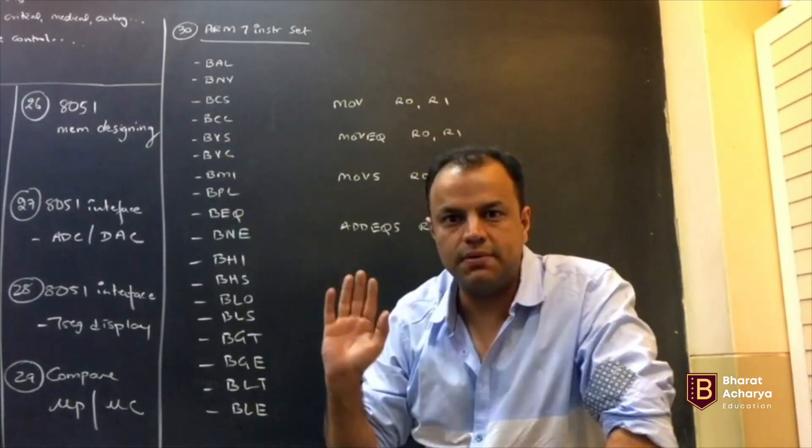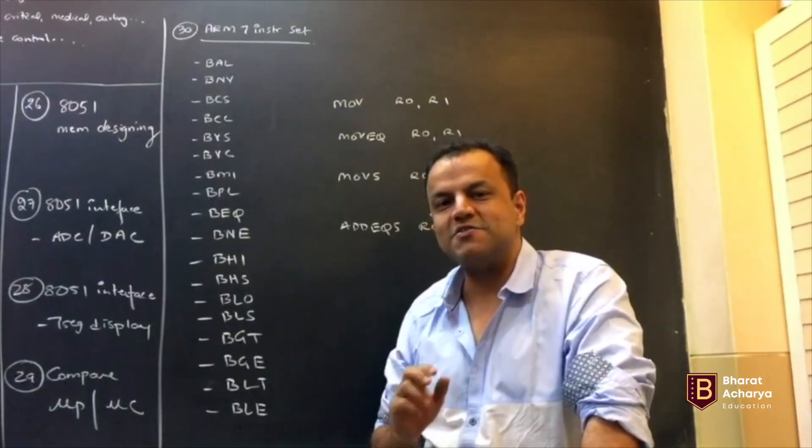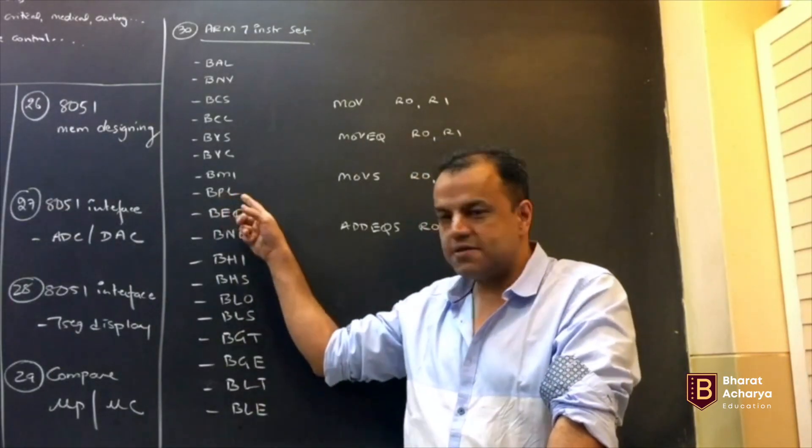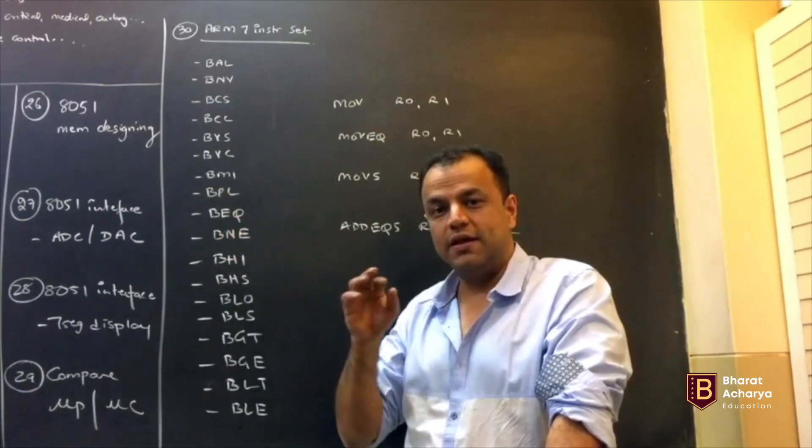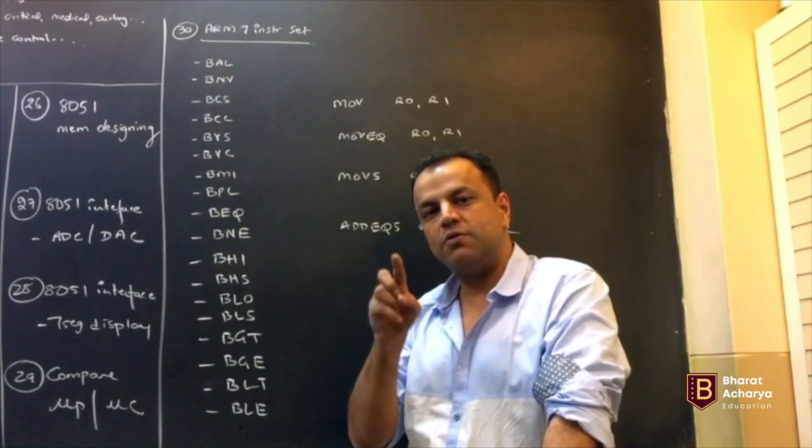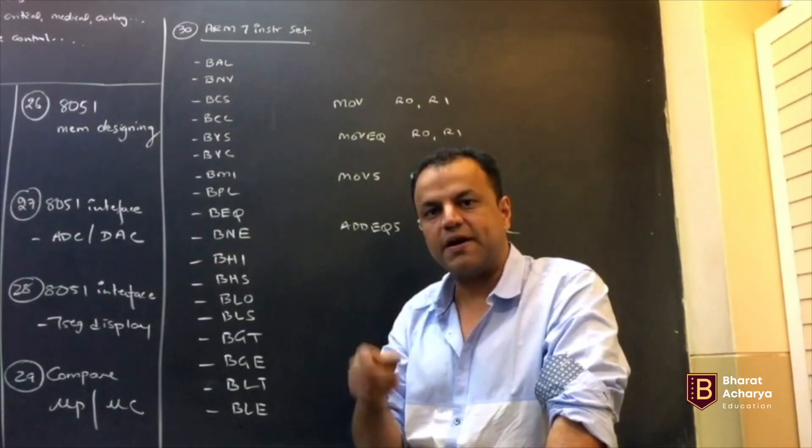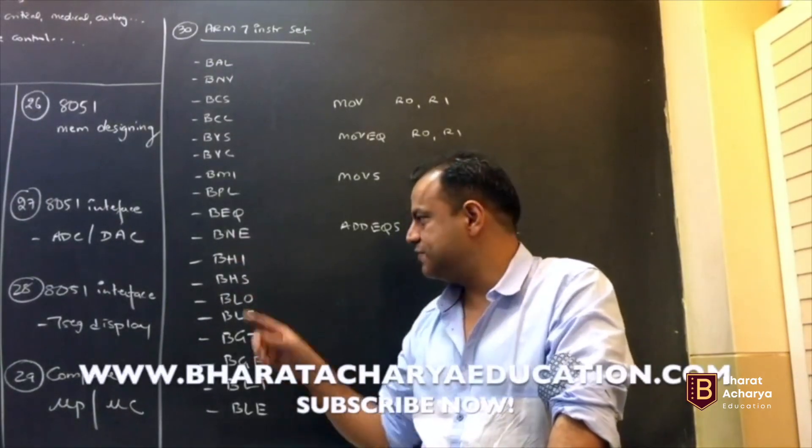BMI. There is an instruction by the name BMI. BMI stands for branch if minus. Minus means negative flag should be 1. There is an instruction by the name BPL, branch if plus. Branch if equal. Equal means 0 flag is 1. You compare two numbers and they are equal, so comparison is subtraction. So 0 flag is 1. Branch if not equal, 0 flag is 0.